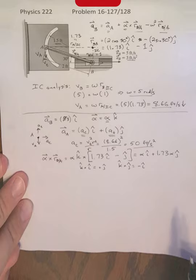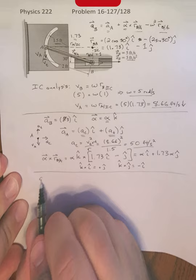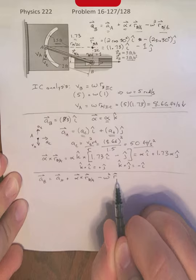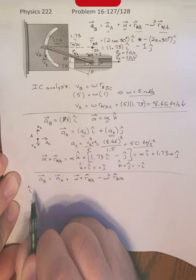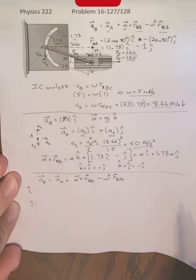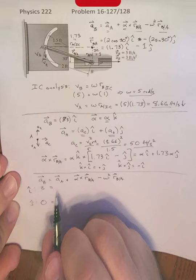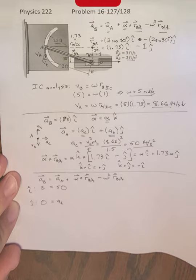Now, coming back to our big acceleration expression, we have aB is equal to A sub A plus alpha cross rB/A minus omega squared rB/A. And I want to write separately the i hat and j hat components of this. So just going through all of our expressions and collecting these terms here, we have A sub B has an x component, no y component. A sub A has an x component, a 50, a y component of A sub T, that's one of our unknowns.